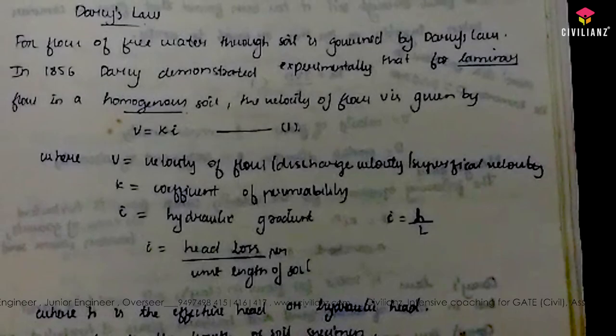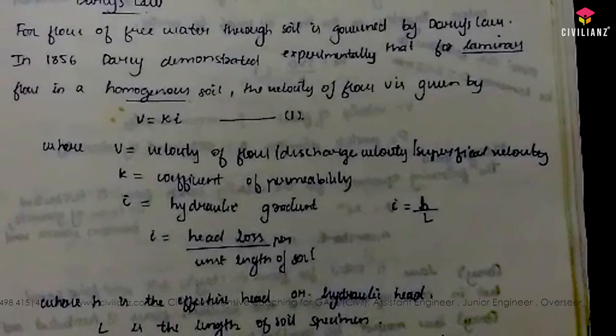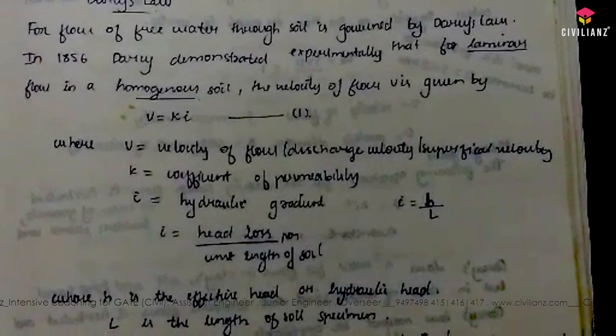The velocity of flow v is given by v = ki, where v is the discharge velocity, also called the superficial velocity.